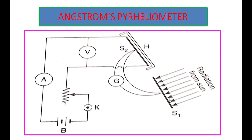One strip is open to receive radiation from the sun, and the other strip is shielded from solar radiation. Both strips are connected at their back surface to a galvanometer G.